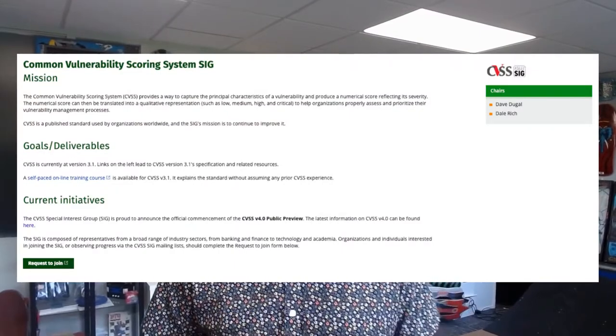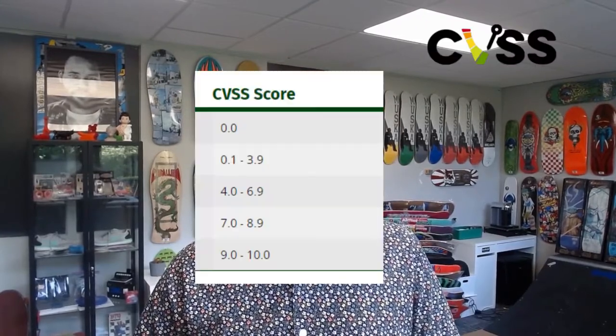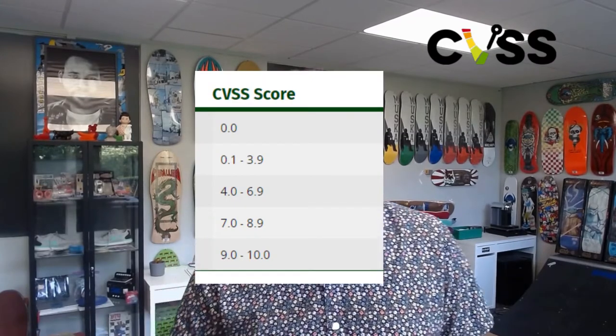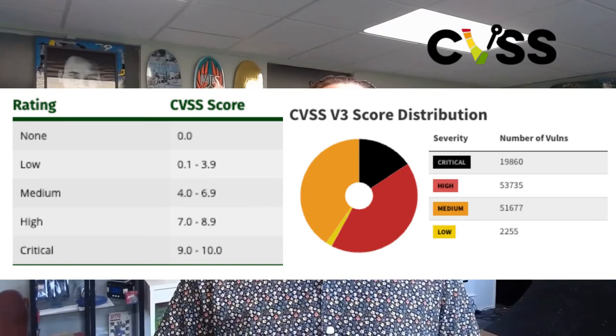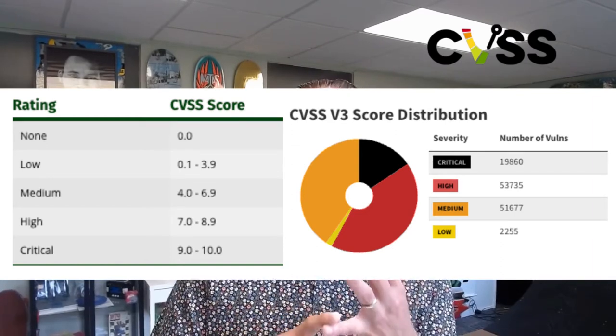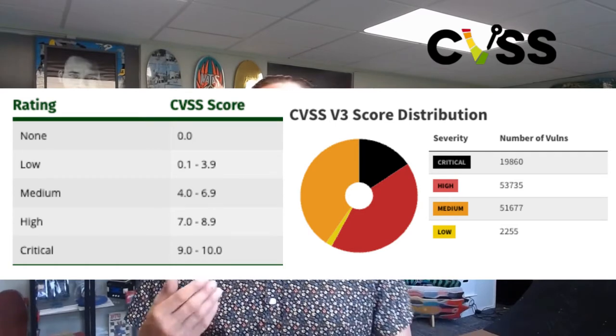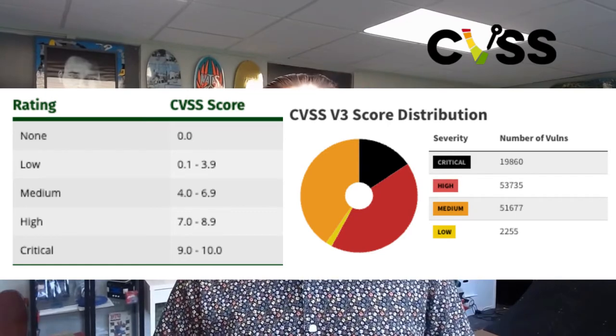CVSS is maintained by a special interest group known as a SIG as a part of FIRST.org, and their mission is to continue to improve CVSS. The Common Vulnerability Scoring System provides a way to capture the principal characteristics of a vulnerability and produce a numerical score reflecting its severity. This score ranges from 0 to 10 in increments of 0.1. The numerical score can then be translated into a qualitative representation — what you see known as low, medium, high, and critical vulnerabilities — and this helps organizations properly assess and prioritize their vulnerability management processes.